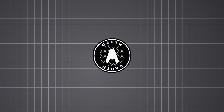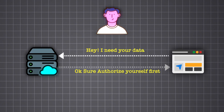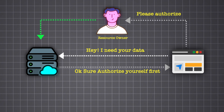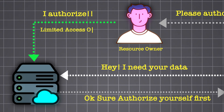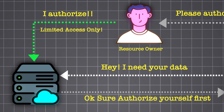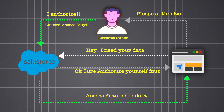For that, we need to understand OAuth 2.0. OAuth 2.0, which stands for Open Authorization, is a widely adopted authorization framework that allows applications to access resources from another service on behalf of the user. Think of it as a secure way to hand over limited access without giving away your credentials. In our case, it's how client apps get access to Salesforce APIs securely.